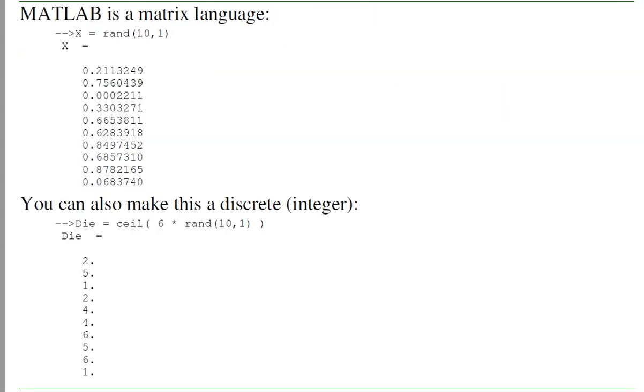Now MATLAB is a matrix language. If I type in RAND, I get a single random number. If I do RAND of 10,1, I'll get 10 random numbers in a 10 by 1 matrix. That'll be a continuous probability. We'll cover that a little bit later.